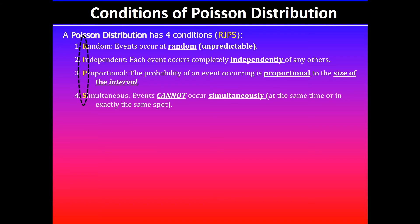In short, we can use RIPs: R means random, I for independent, P for proportional, and S for events cannot occur simultaneously.